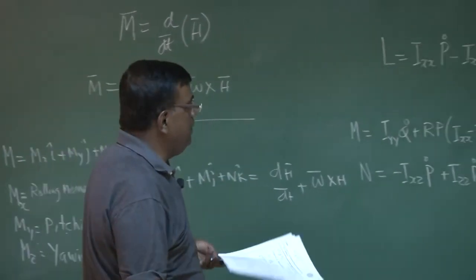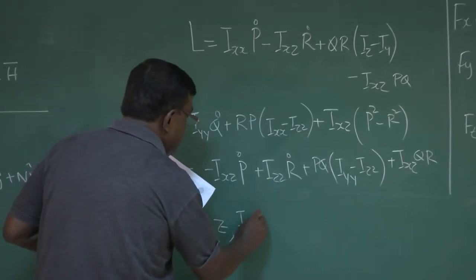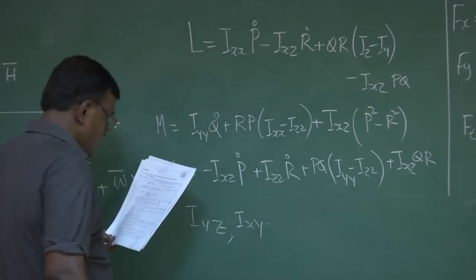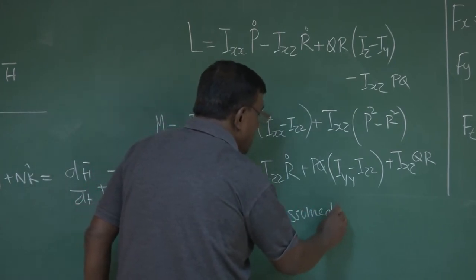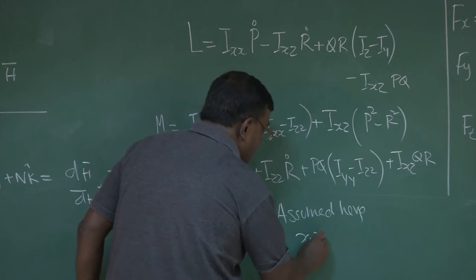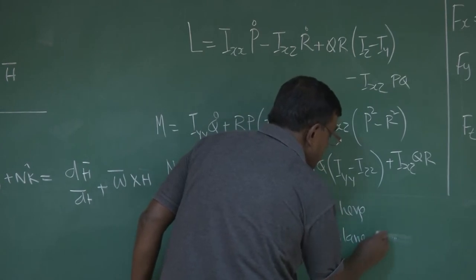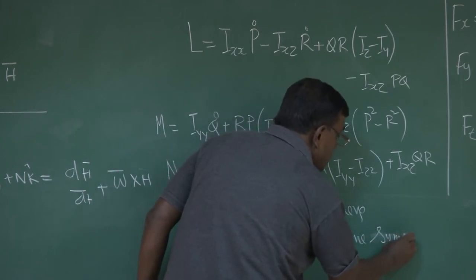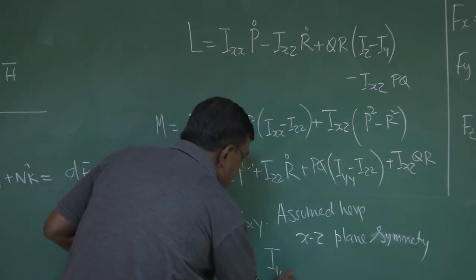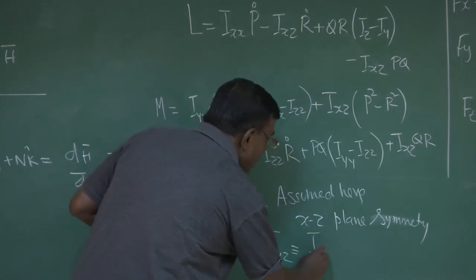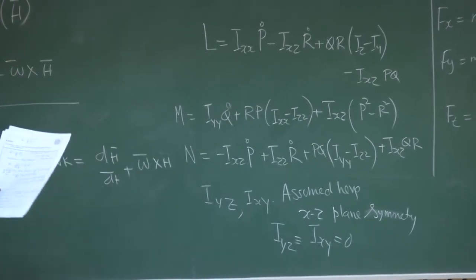I again repeat, please substitute this and this expression and see indeed you get this sort of an expression or not. You may be wondering what is this iyz, iyz and ixy varies. So, we have assumed xz, we have assumed here xz as plane of symmetry which is not a bad assumption, plane of symmetry and hence by definition iyz = ixy = 0. So, those terms do not appear in this expression.